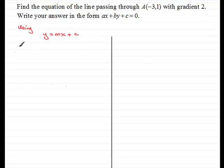So what we know is that the gradient is 2, so M is 2. So we now know that the line is of the form Y equals 2X plus the constant C.